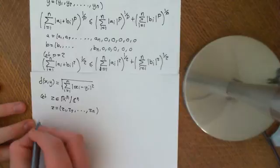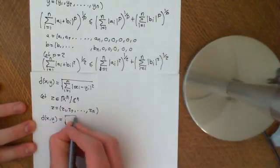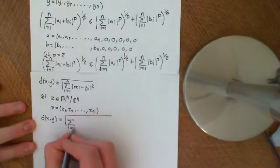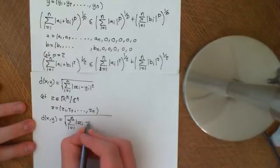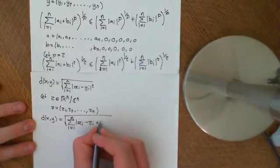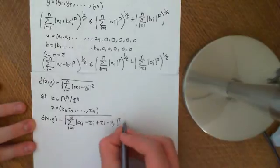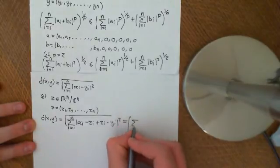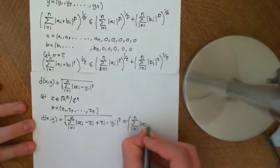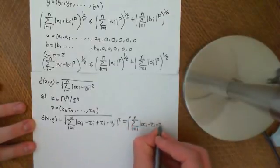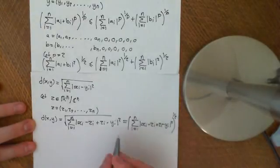And then the distance between x and y could be rewritten as the square root of our same trick again. Subtract it and then add it back on to make the statement true: (xᵢ - zᵢ + zᵢ - yᵢ) squared. And it might help to rewrite this as the summation i equals 1 to n of the modulus of (xᵢ - zᵢ + zᵢ - yᵢ) squared, all of that to the power of a half.